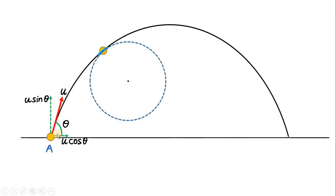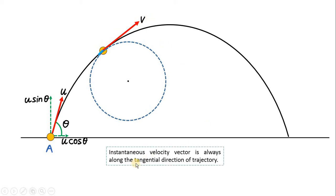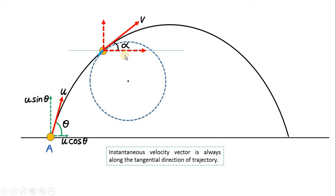Suppose our particle has reached a general point, and at this moment its velocity is v along the tangential direction. The instantaneous velocity vector is always along the tangential direction of the trajectory — this is true at the initial point and at every point along the path. Drawing a horizontal line, if this velocity vector makes angle alpha with the horizontal, then the horizontal component is v cos alpha and the vertical component is v sin alpha.